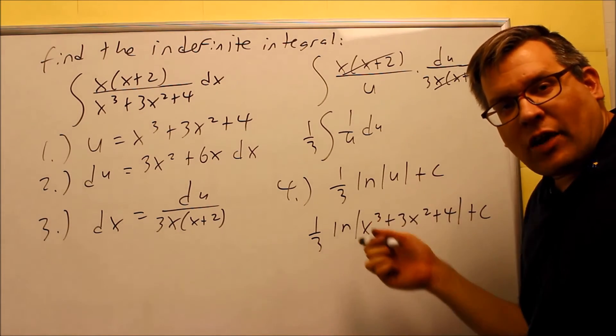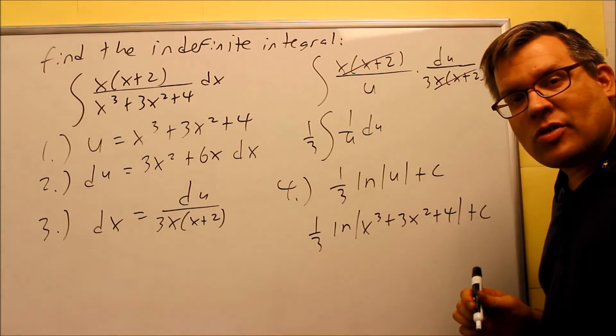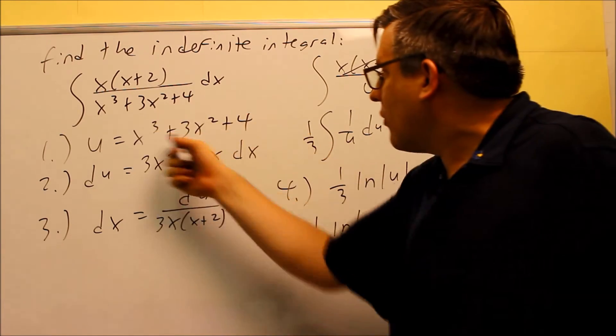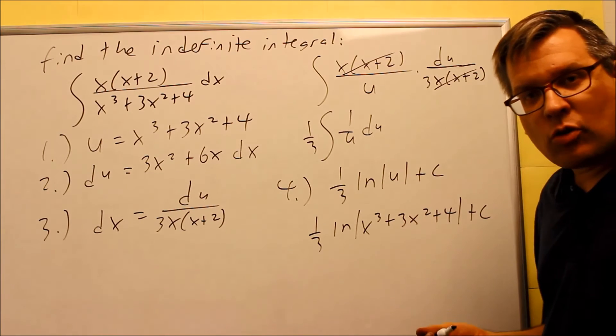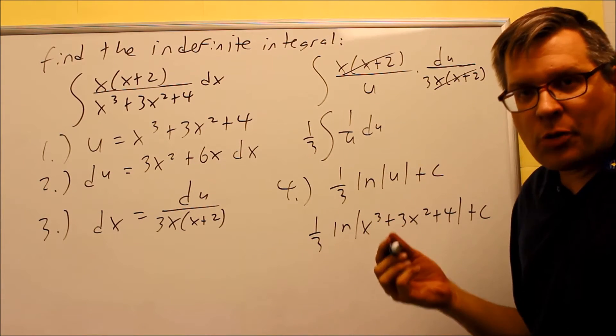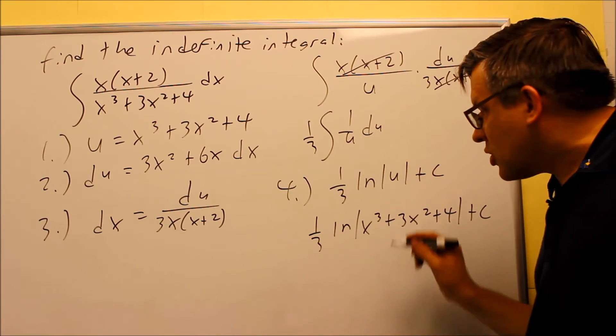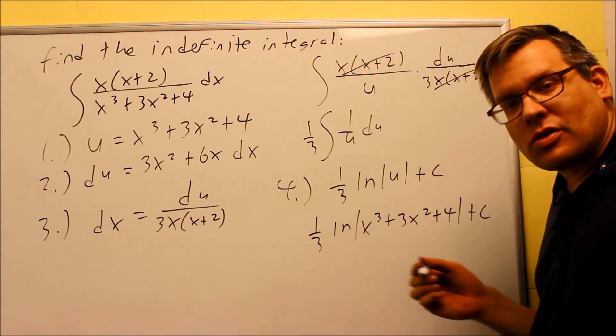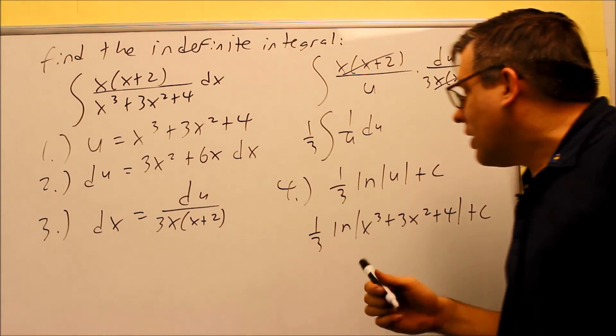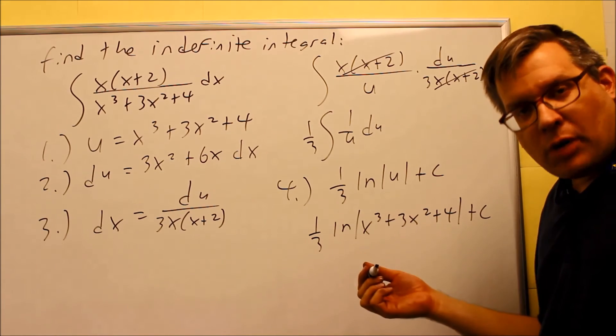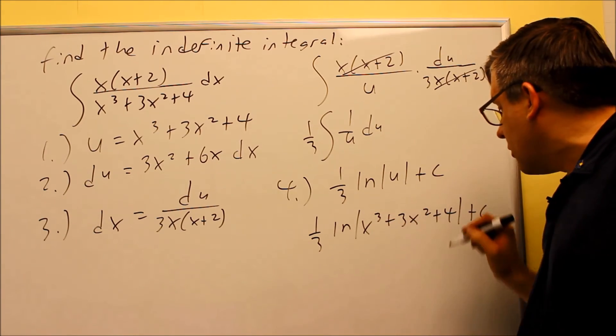Now, there are some cases where you may not have to include the absolute values, and that's if you know that whatever you have here is always going to be positive no matter what. Like if it was like x squared plus 1 or something like that, we wouldn't need to put the absolute values. You can make them parentheses. But in this case, because you have a cube, we don't know if that could be positive, could be negative, so that's why we are going to include the absolute values in our answer.